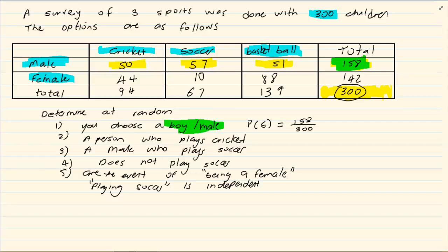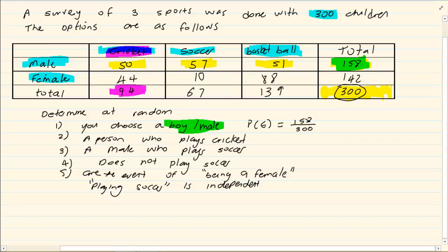Now what is the probability of a person who plays cricket? When I am talking of the probability of a person who plays cricket, I am talking of the total. So I am looking at cricket but I am looking at the total. So the total amount of cricket players is 94. So my probability would be 94 over 300.